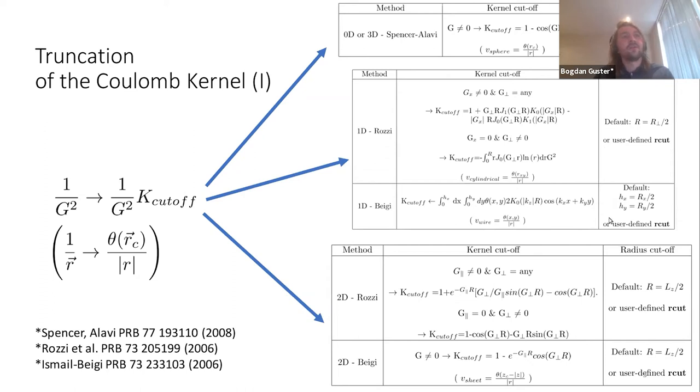For all the cases I'm showing, we have set the indicated cutoff radius for each specific method, with the mention that we've left the liberty for the user to play around with another variable called rcut to see how this modifies the Coulomb kernel. It's just to be able to manipulate it, but it's not recommended.